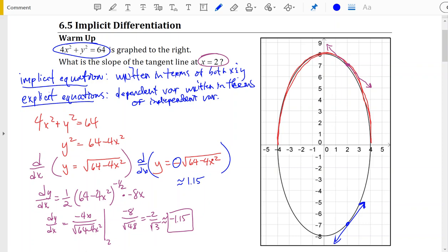We would probably find it reasonable that the slopes are opposites of each other whether we take the top half of the ellipse or the bottom half of the ellipse. And so we have two different slopes when x is equal to 2.